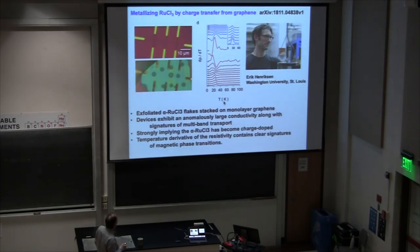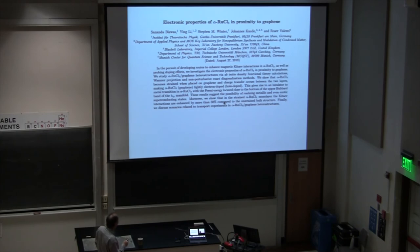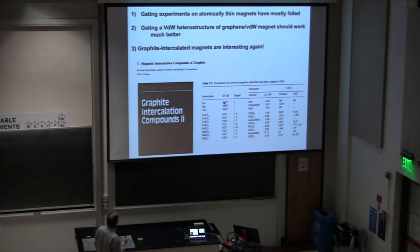Something that Eric has been working on. Eric made a sandwich with ruthenium trichloride and graphene. What he discovered was that there was charge transfer. He was able to metalize the ruthenium trichloride by charge transfer from the graphene to the ruthenium trichloride. This is a really pretty interesting result. Some theorists have kind of picked up on this. This is Rosa Valenti's group. She finds very similar to what Eric had discovered. She can understand this from first principles.